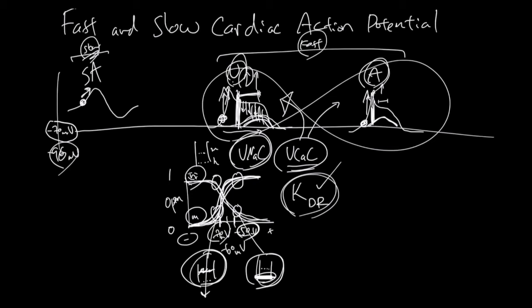So in the slow action potential of SA node cells, you cannot count on the voltage-gated sodium channels to do the job. They exist, but they're inactivated. So here, you're solely relying on the voltage-gated calcium channel, as we saw here, to do the job. So the slope is a little bit slower. This is why this is the slow action potential.